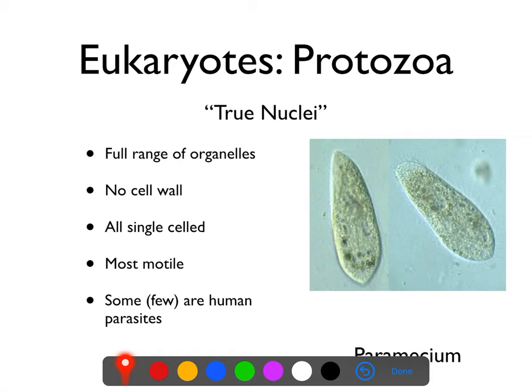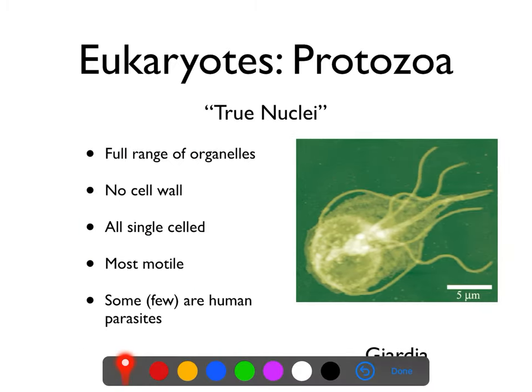Here we have the paramecium — that's a protozoa. And this is Giardia, which is actually a human disease-causing parasite. You can see it's got this cool little teardrop shape with flagella coming off of it — I think it looks like something you'd stomp on in Mario Brothers. They have two nuclei which look kind of like googly eyes, and a structure inside that looks like a bent rod but from certain angles looks like a smile. So they're kind of cool looking. You can probably see them in lab.